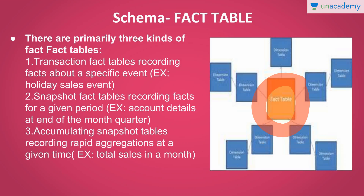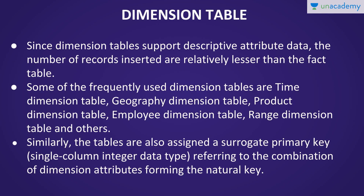A fact table is primarily of three kinds. First is a transaction fact table, which records a specific event — for example, the amount of sales happening during a holiday event. Second is a snapshot fact table, which records facts for a particular period such as a month, year, or quarter. Third is an accumulating table, which accumulates data according to aggregations under multiple conditions — for example, total sales in a particular month.